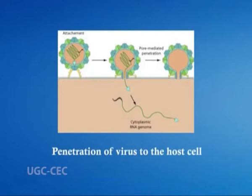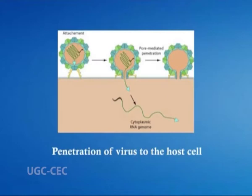Phagocytosis is a process by which cells ingest large objects such as cells that have undergone apoptosis, bacteria, or viruses. The object is surrounded by a membrane and a large vacuole known as a phagosome. In receptor-mediated endocytosis, coated pits are formed when the cytoplasmic membrane folds inward, and these inward-budding vesicles bud to form cytoplasmic vesicles. Pinocytosis involves the uptake of solute and single molecules such as proteins.